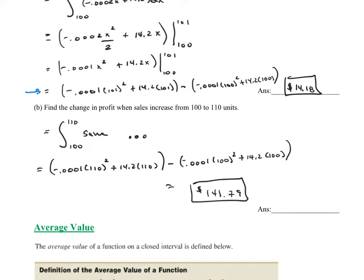That means once we sold the 101st through the 110th units — those 10 units — we increased our profit by approximately $141.79.